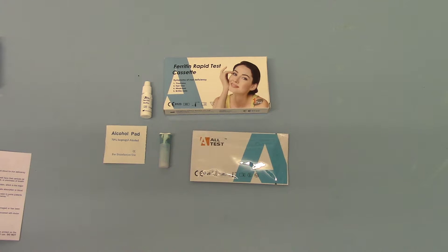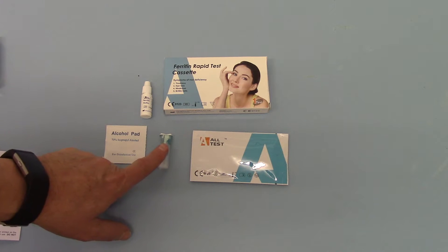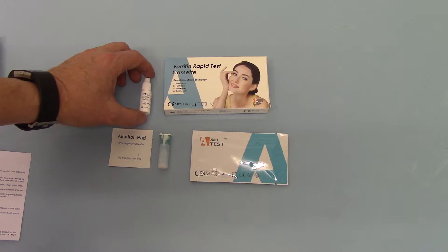Now ferritin is an easy test to undertake. The pack contains a test cassette with a micro pipette, a lancet, an alcohol wipe to wipe your finger and a content buffer.